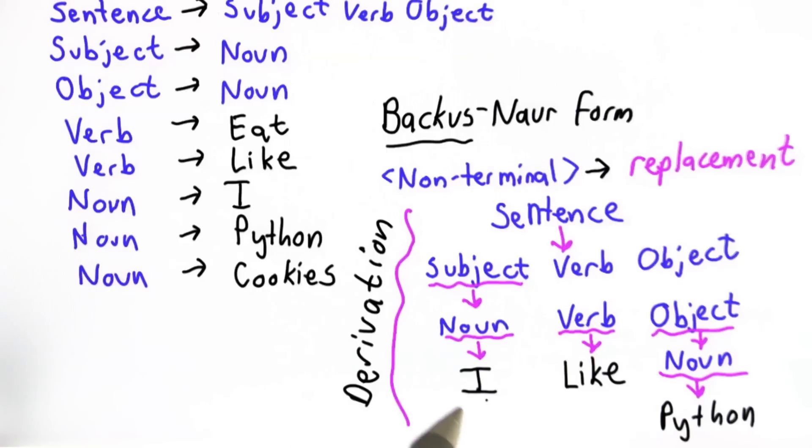In this case, we produced the sentence, I like Python. But there are lots of other sentences we could have produced, starting from the same non-terminal, if we pick different rules to follow.